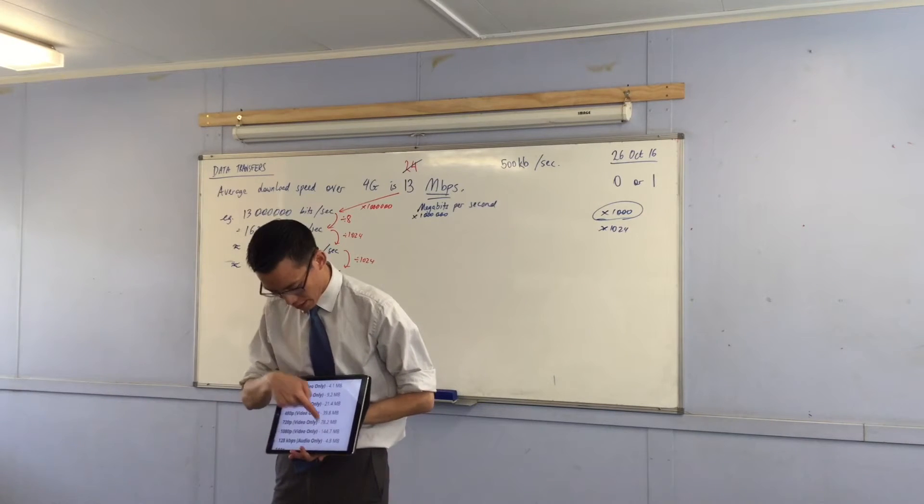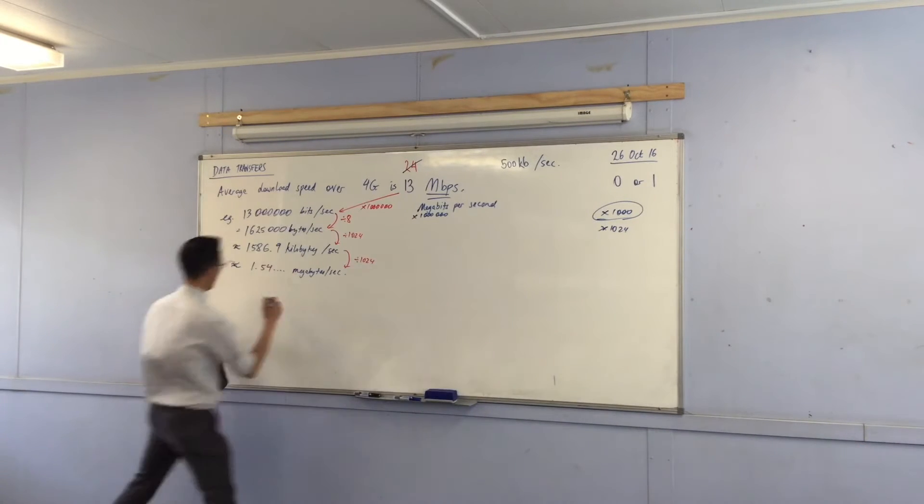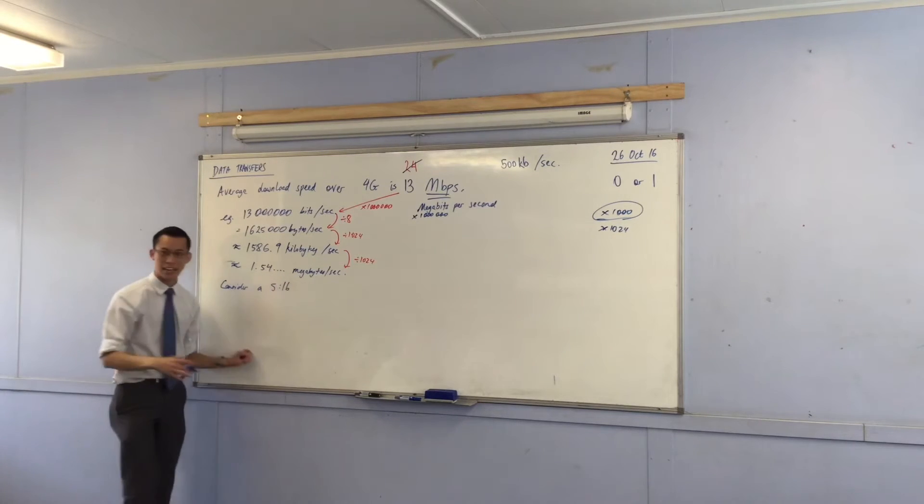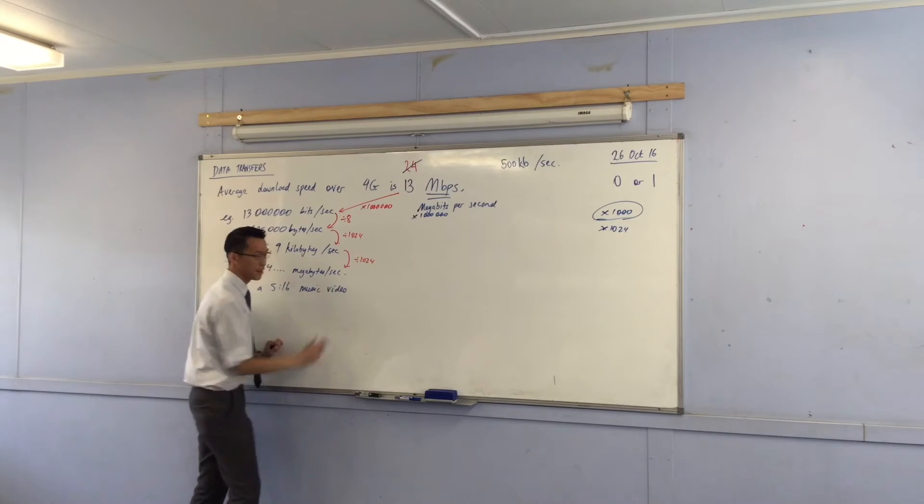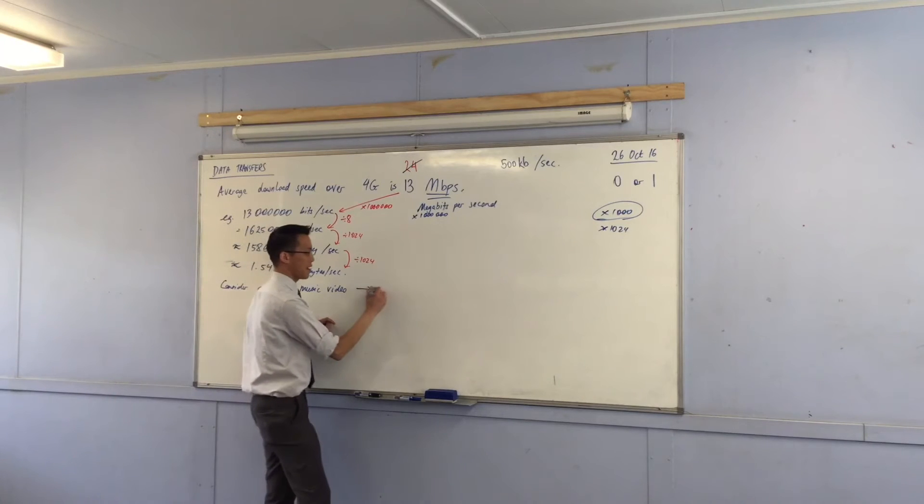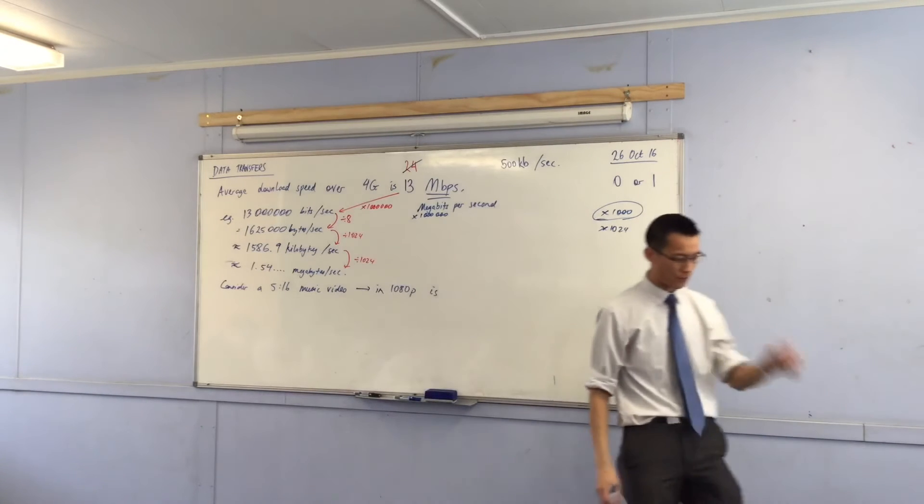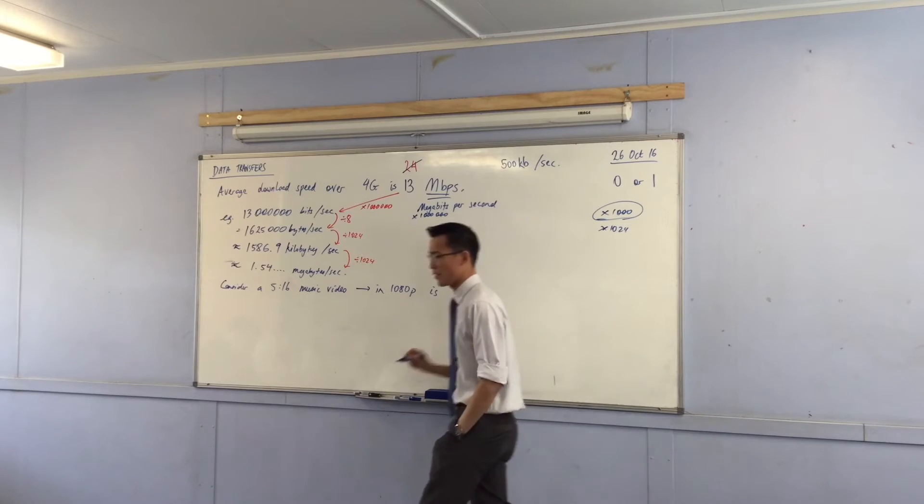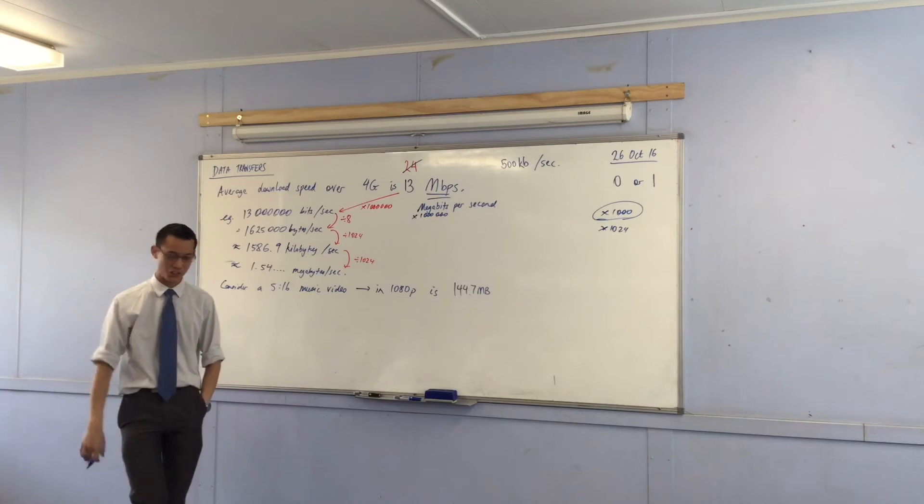Let's go right to the top. Let's write this down. If you download this five minute 16 second music video, this particular video in 1080p is 144.7 megabytes. If you're curious about what 1080p means, for now you just need to know it's a kind of high definition. It'll look good on your iPhone.